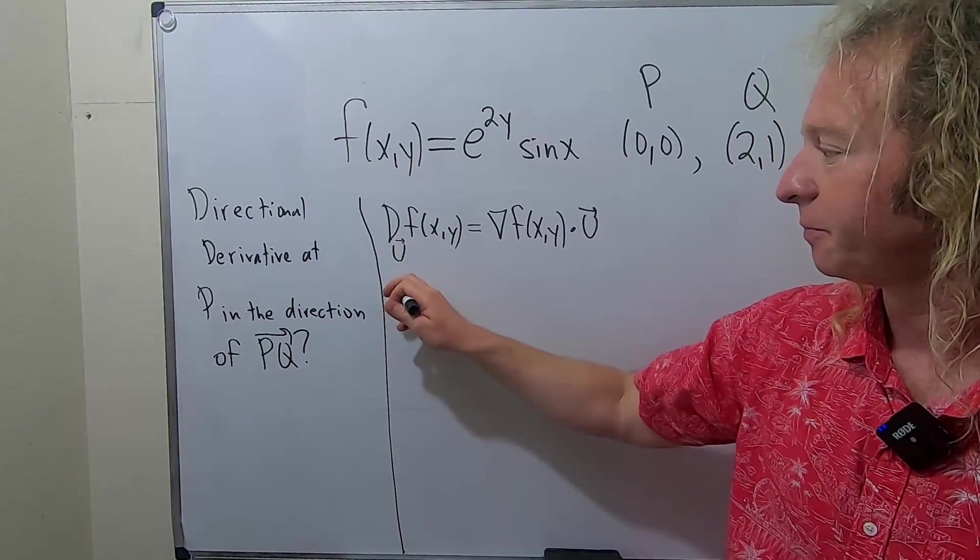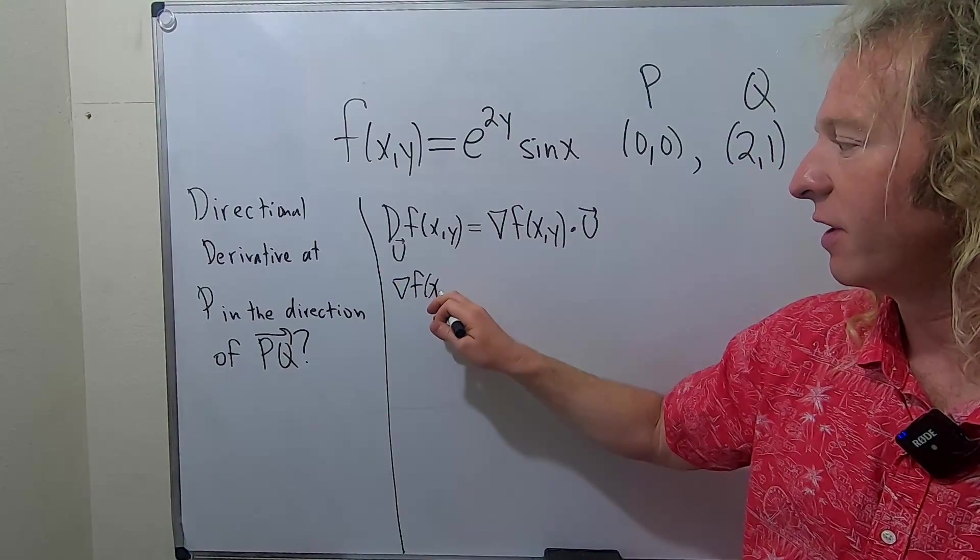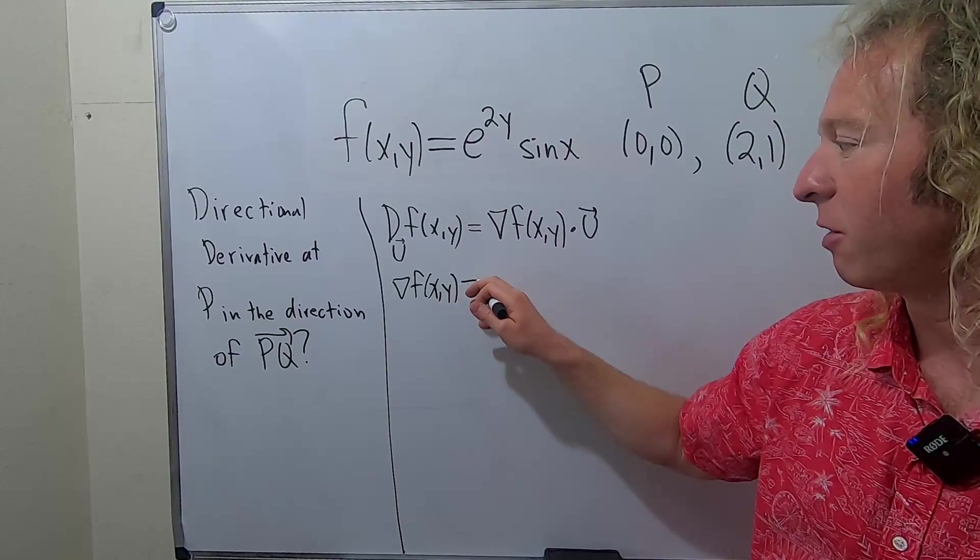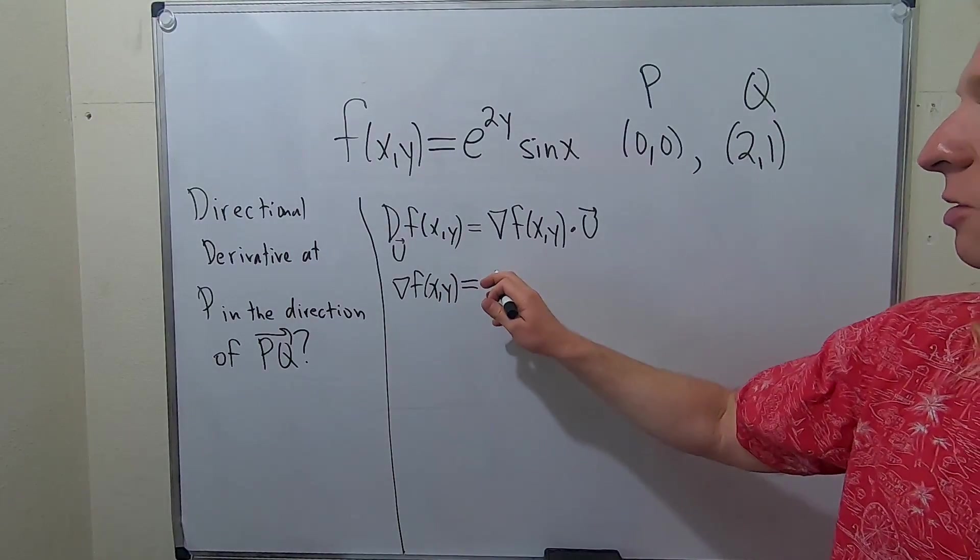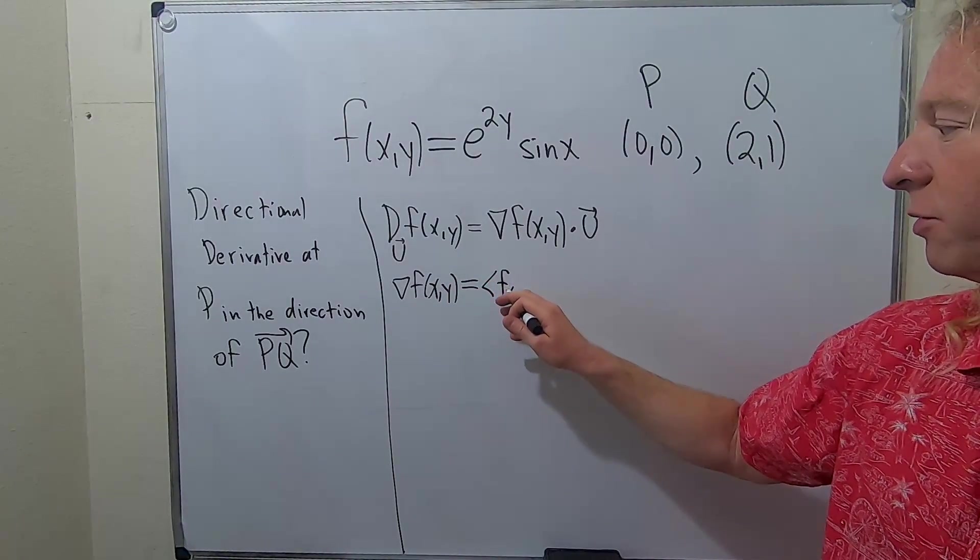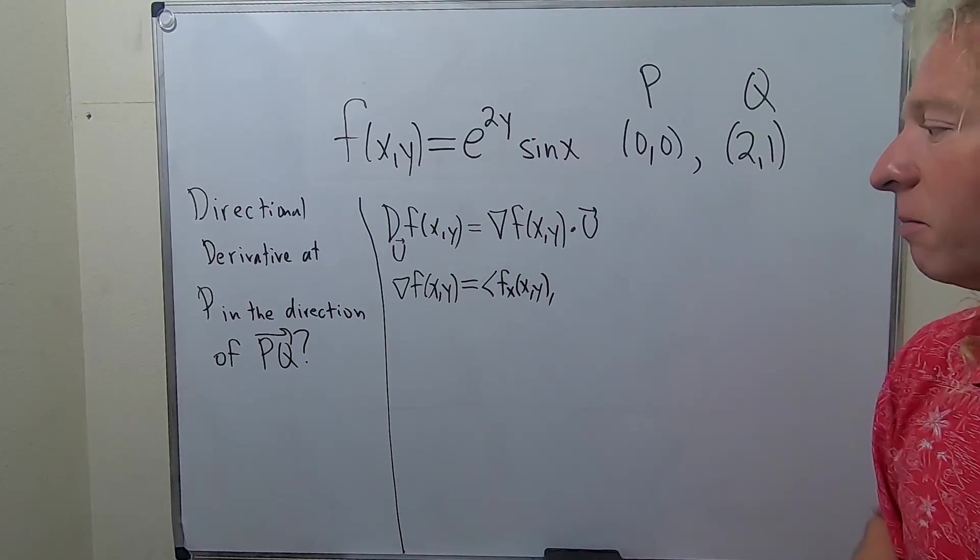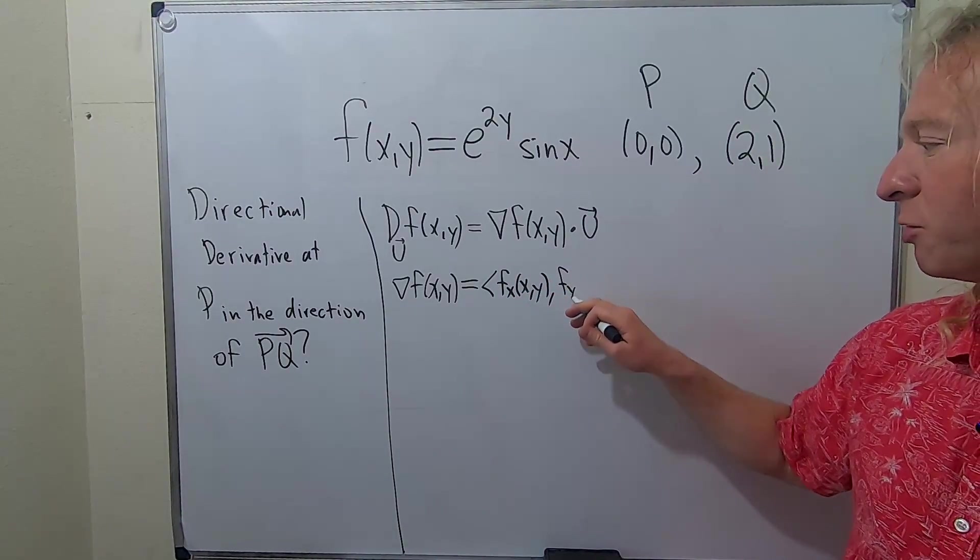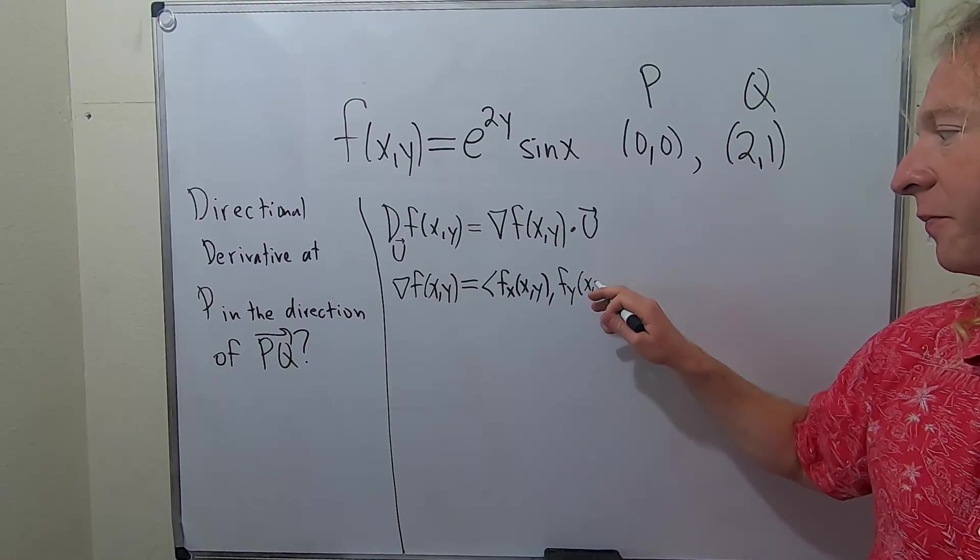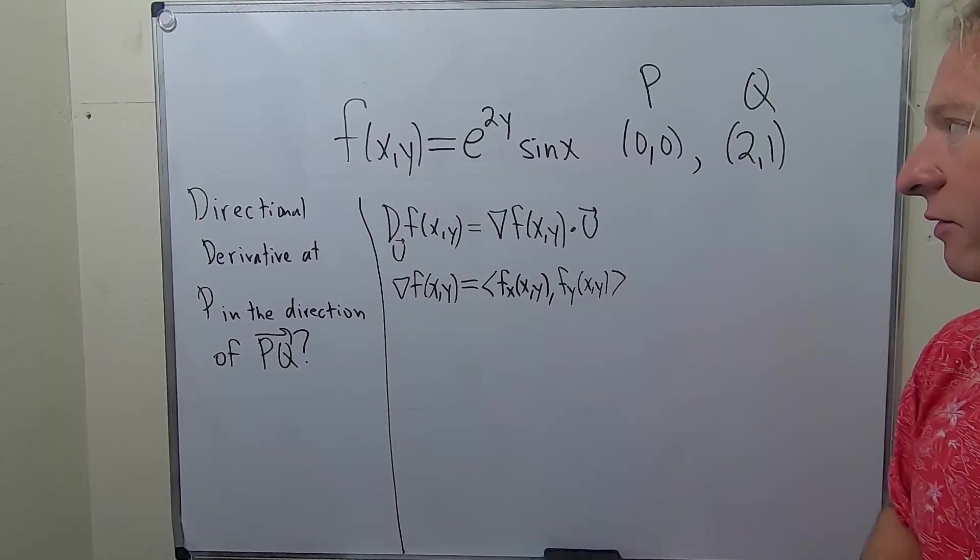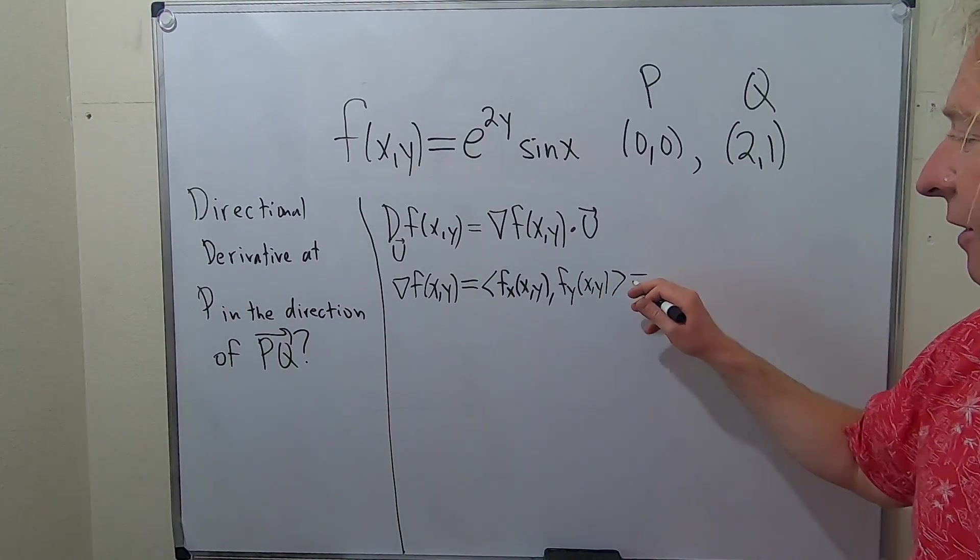The gradient vector is just the vector which consists of the partial derivatives. In the first component, we have the partial derivative with respect to x at x, y. And in the second component, we have the partial derivative with respect to y at x, y. This is called the gradient vector. Let's go ahead and fill everything in.